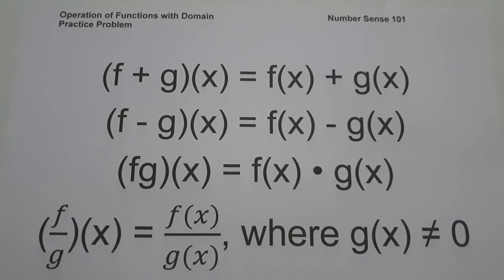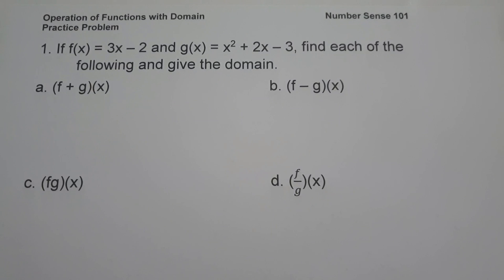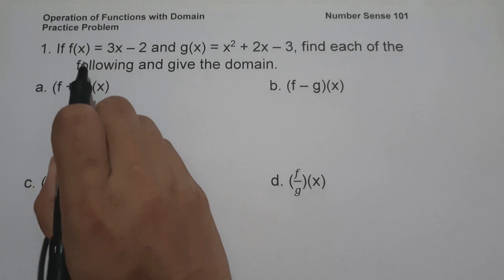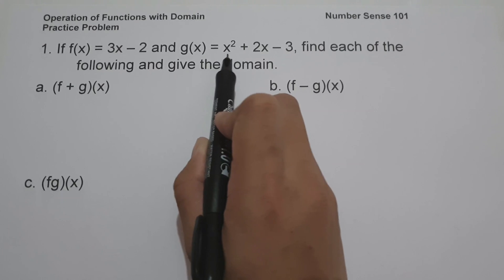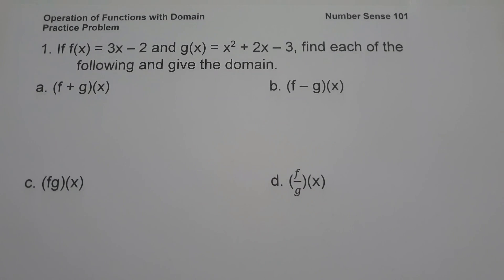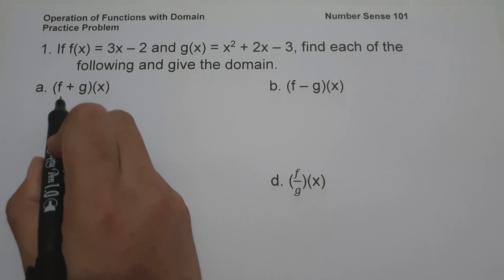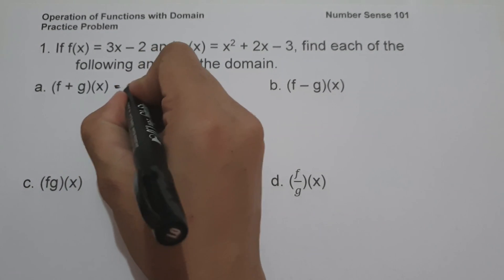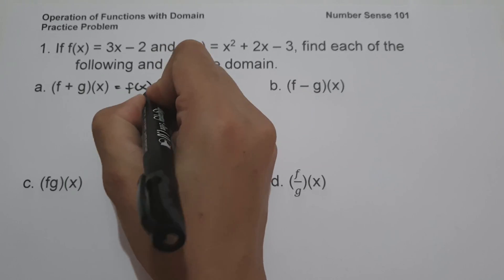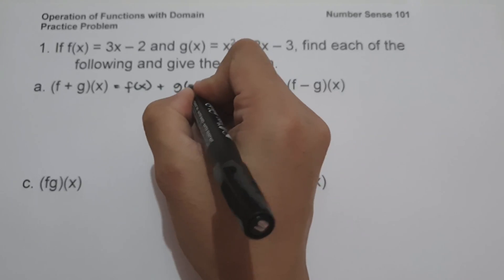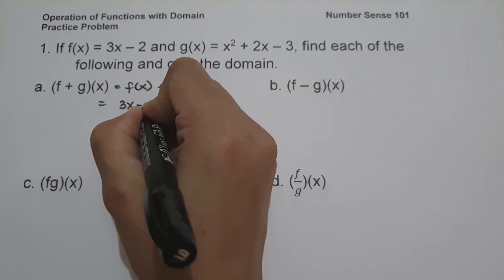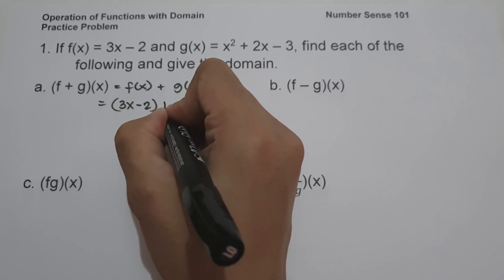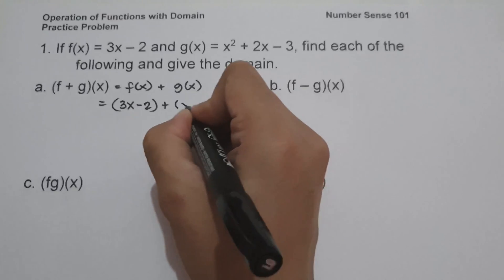Let's start with Example 1. If f(x) = 3x − 2 and g(x) = x² + 2x − 3, find each of the following and their domain. On letter a, we have (f+g)(x), which equals f(x) + g(x), so that is (3x − 2) + (x² + 2x − 3).